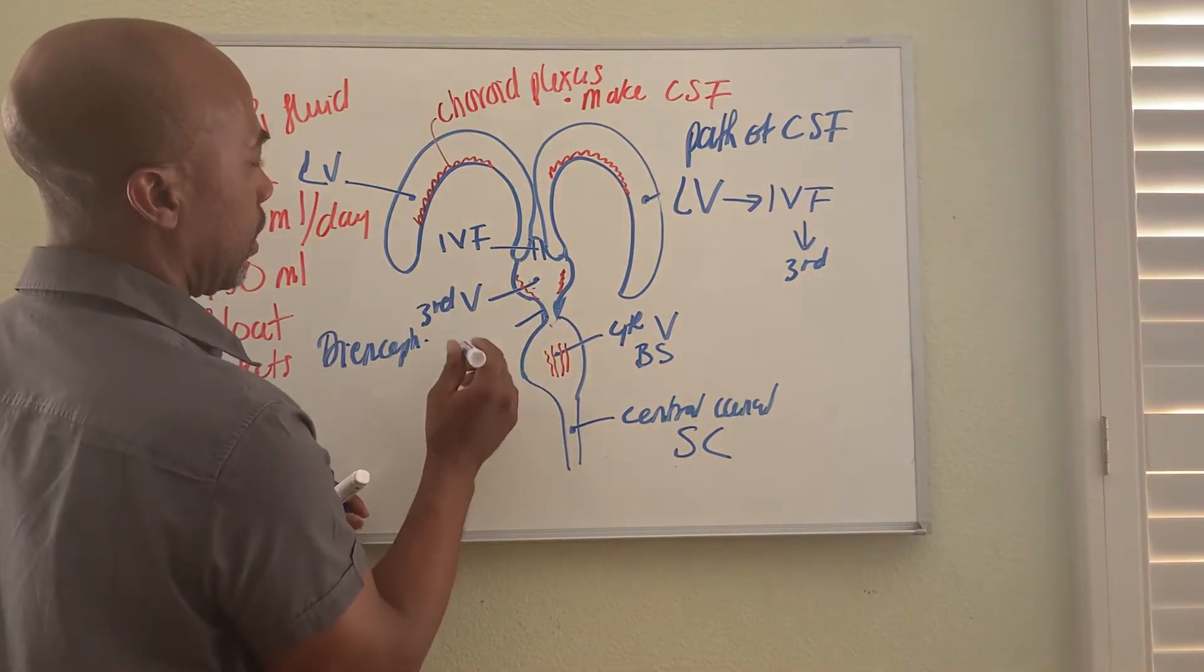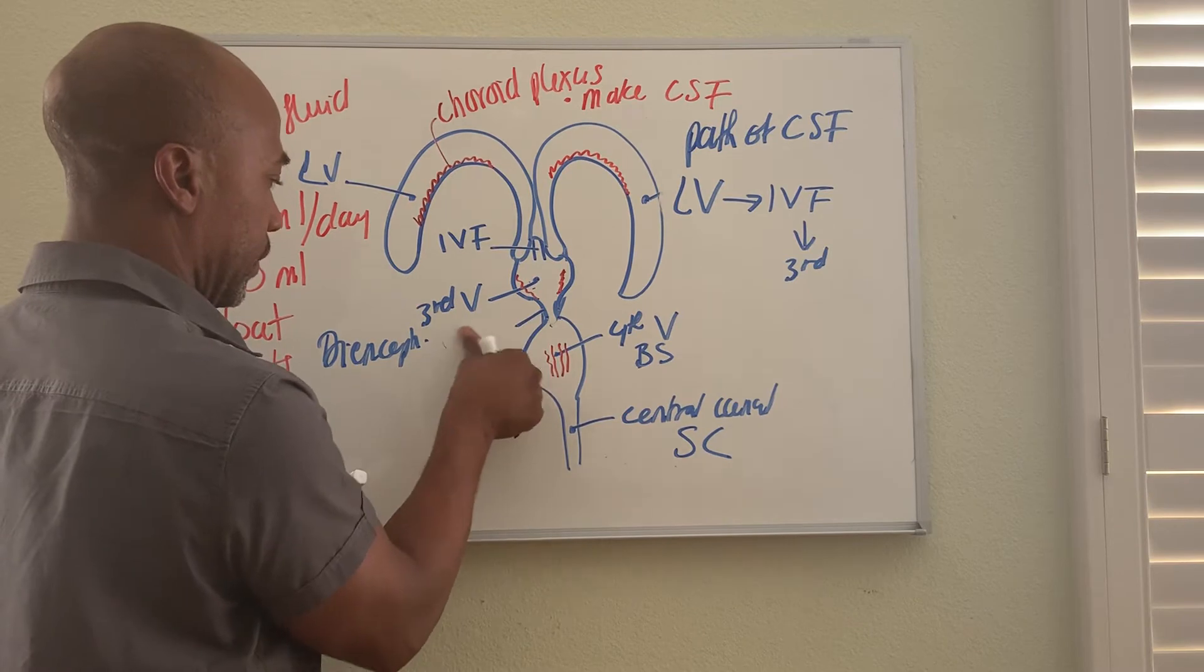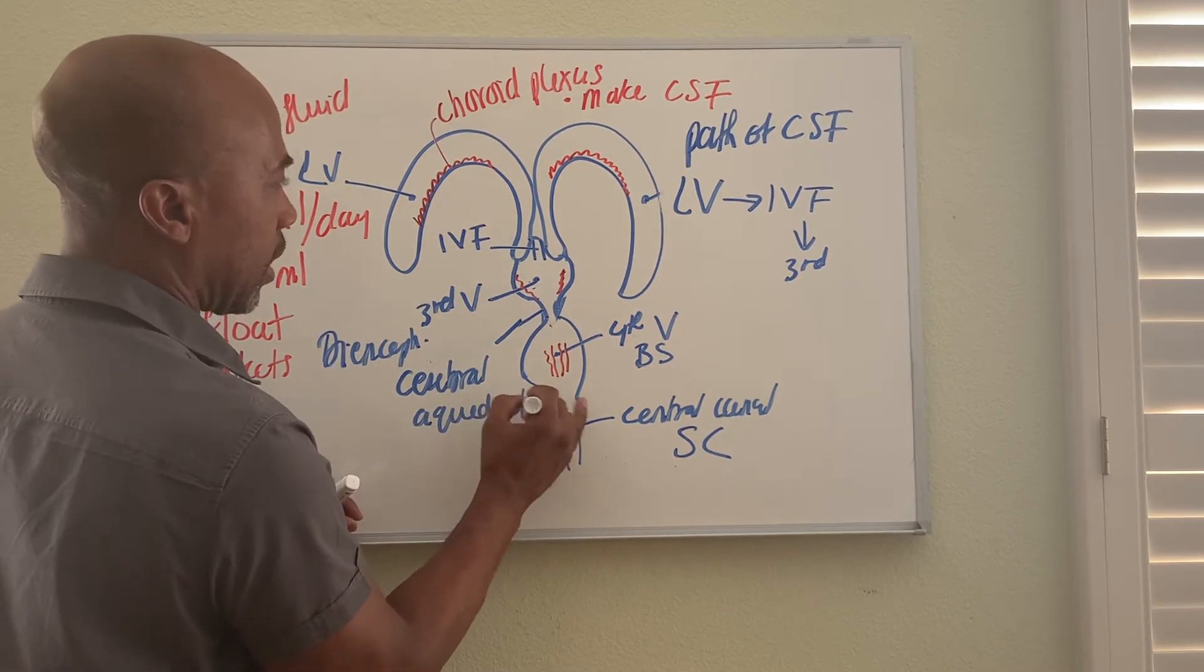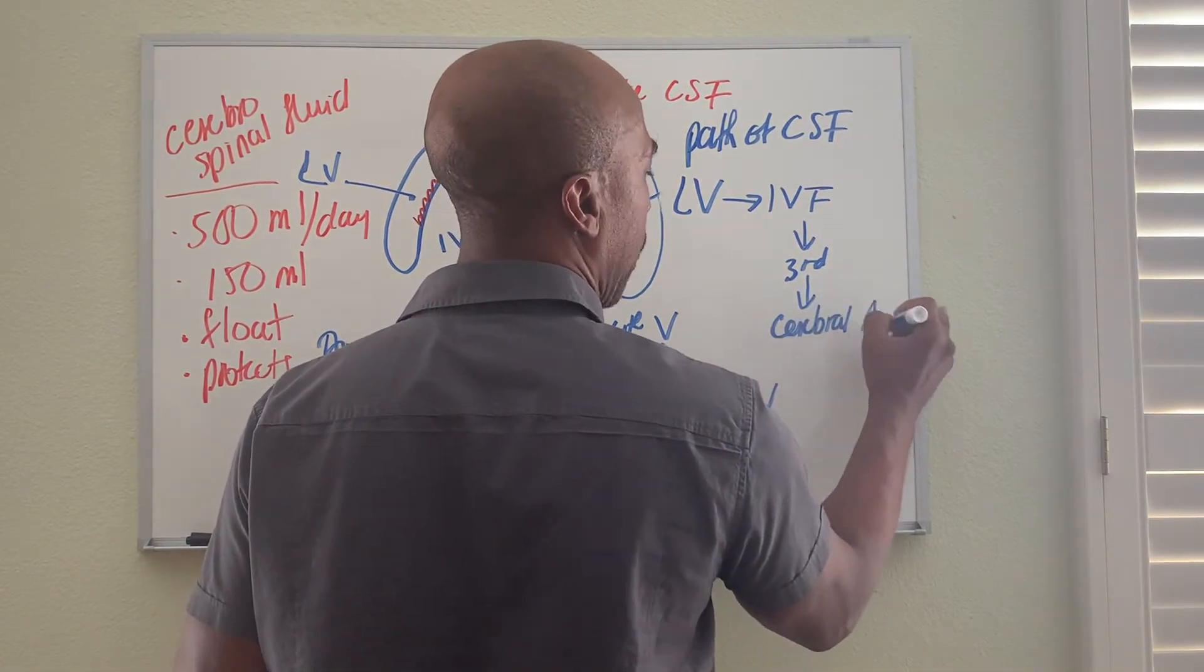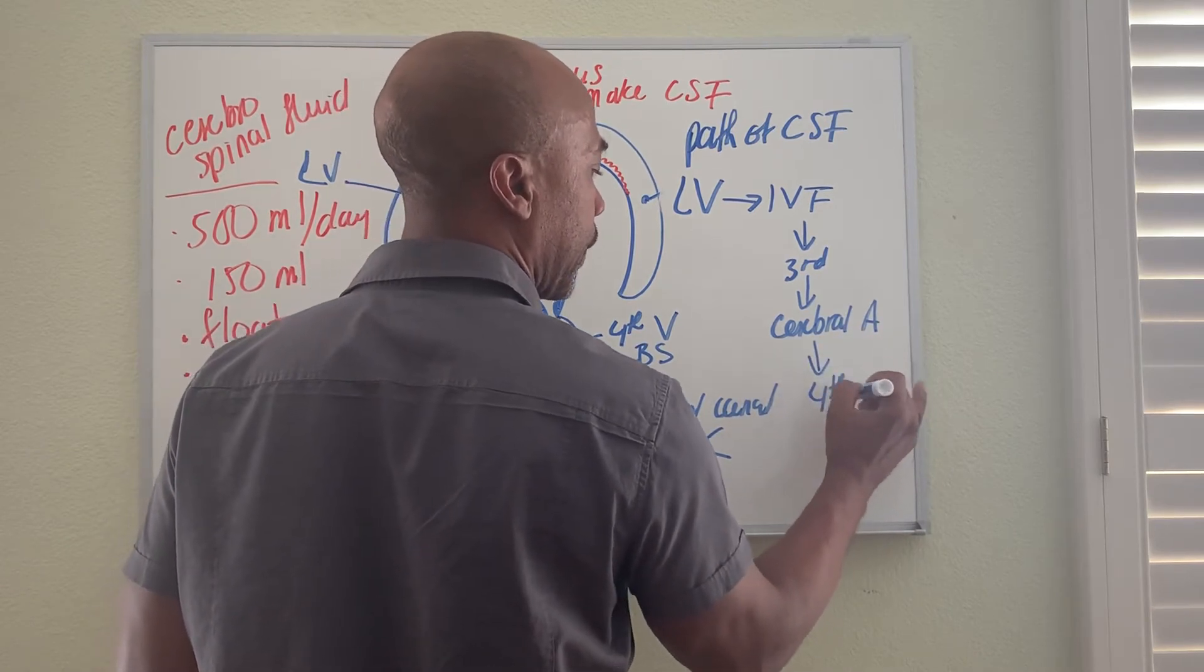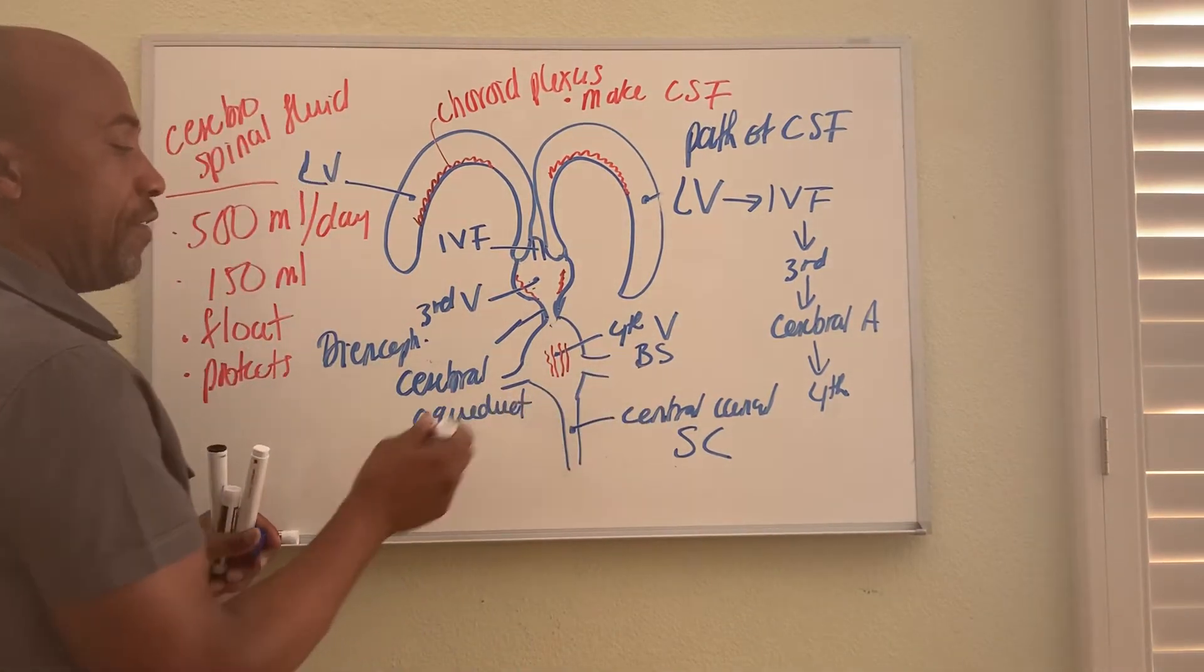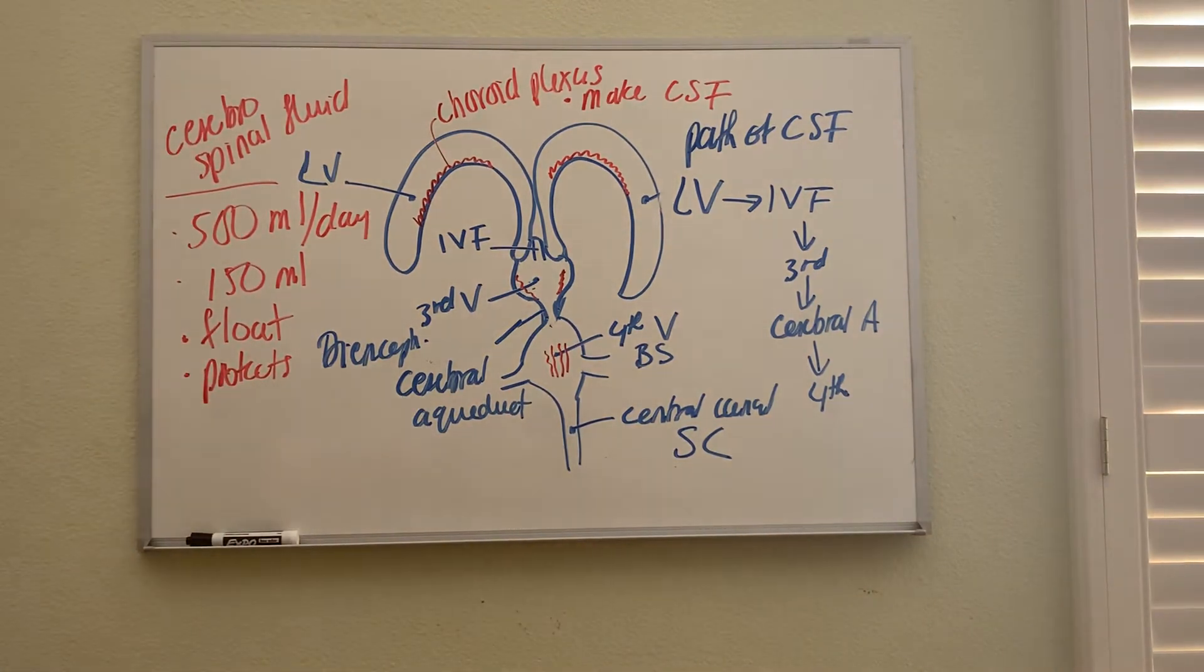Then the third ventricle has a bridge between the third and fourth. That bridge here is called your cerebral aqueduct. So from the third, through your cerebral aqueduct, to enter the fourth ventricle. Once it's in the fourth ventricle, there are openings called apertures on the side or in the middle.